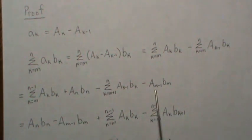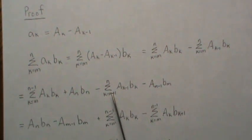Then I'm going to take these two and write them first, and that's actually the first two pieces of the formula that we wanted to prove. And here the A_n b_n minus A_{m-1} b_m is just copied over here.